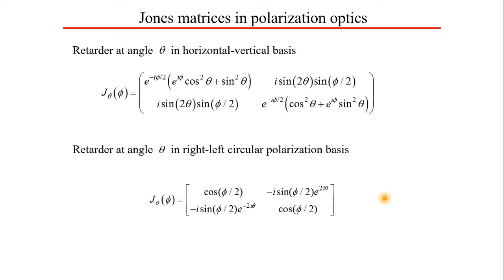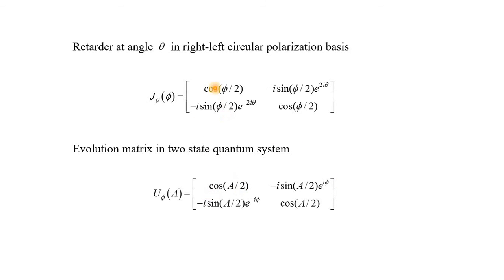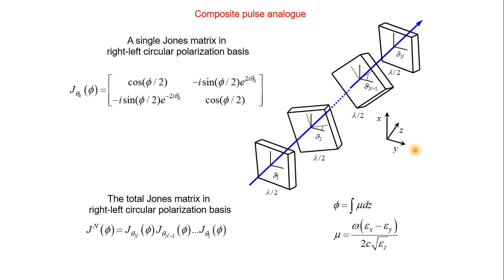Comparing the Jones matrix of the retarder in the right-left circular polarization basis with the evolution matrix of the two-state quantum system, they correspond one-to-one. The pulse area here is given by the retardation phi, and the phase corresponds to 2 times the angle of rotation theta. So we can apply composite pulses from nuclear magnetic resonance directly to polarization optics: instead of pulses we have wave plates, and we can use N wave plates, rotating the angle of each to nullify successive derivatives. With 3 wave plates we nullify 3 derivatives; with more wave plates we nullify more.